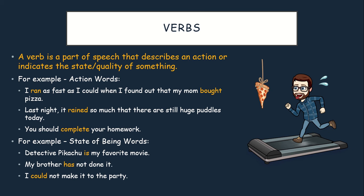Verbs. A verb is a part of speech that describes an action or indicates the state or quality of something. For some action words, let's look at some sentences. 'I ran as fast as I could when I found out that my mom bought pizza.' Ran is what I was doing, so that's the verb, and bought was what my mom was doing — those are the action words. 'Last night, it rained so much that there are still huge puddles today.' Rained is an action, so it's the verb. 'You should complete your homework.' Complete is also an action, so that's the verb.